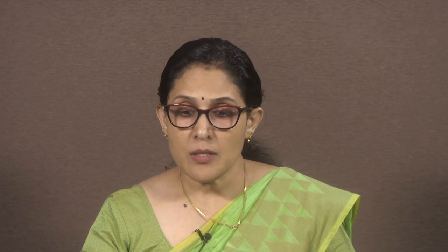Intensive property is independent of the mass of the fluid. Examples include velocity — velocity does not depend on the mass of the fluid — and also hardness and refractive index. These extensive and intensive properties can be either vector or scalar, and based on the type of property being dealt with, we can understand whether that quantity is a vector or scalar.